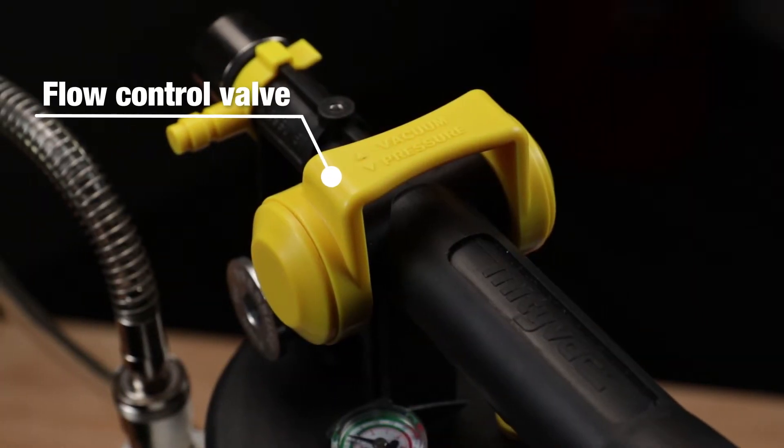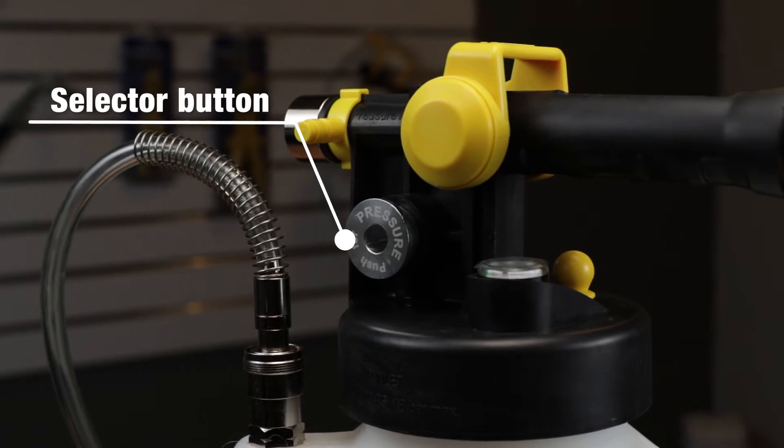The base unit features a convenient flow control valve and switch for quick selection between vacuum and pressure settings.